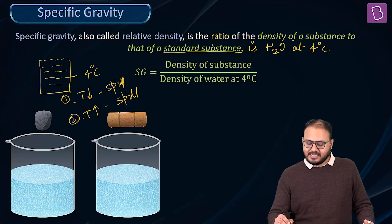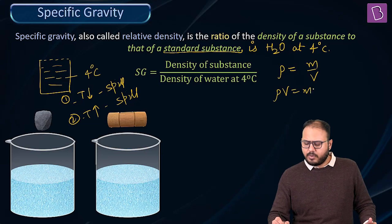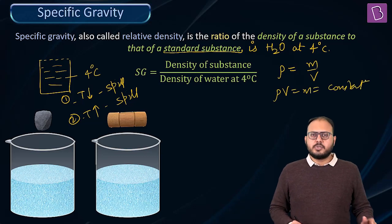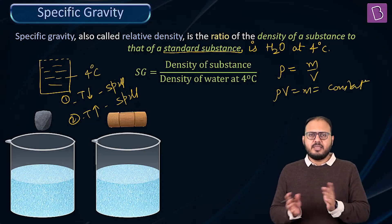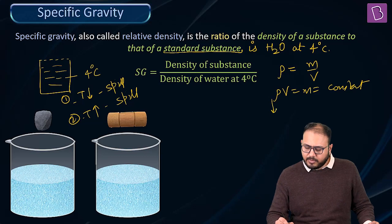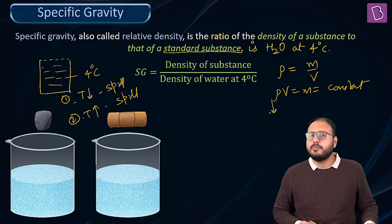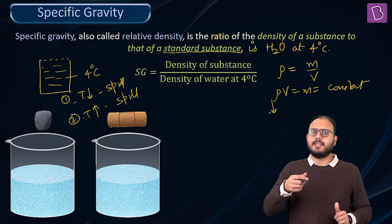Density is mass upon volume. Mass, conservation of mass holds good. That means ρV equal to M is equal to constant, right? Yes, sir. So density is highest at 4. Either way density goes down? Yes, sir. So if density goes down, my lord, to keep the product constant, what happens to volume? It increases.